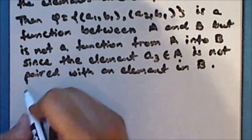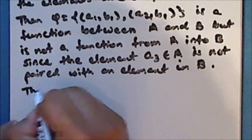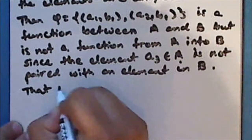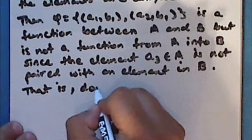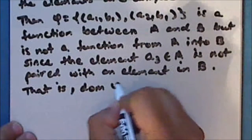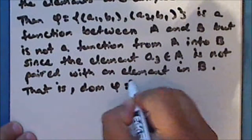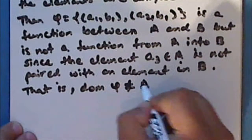That is, the domain of φ is not the entire set A.